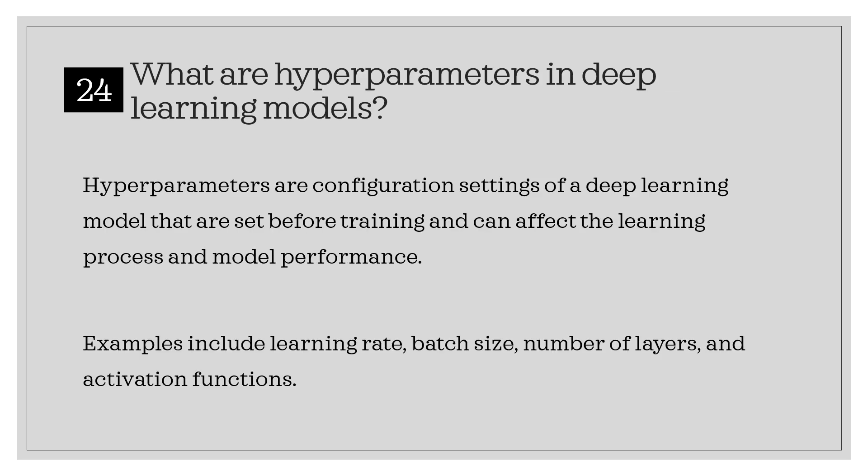What are hyperparameters in deep learning models? Hyperparameters are configuration settings of a deep learning model that are set before training and can affect the learning process and model performance. Examples include learning rate, batch size, number of layers, and activation functions.